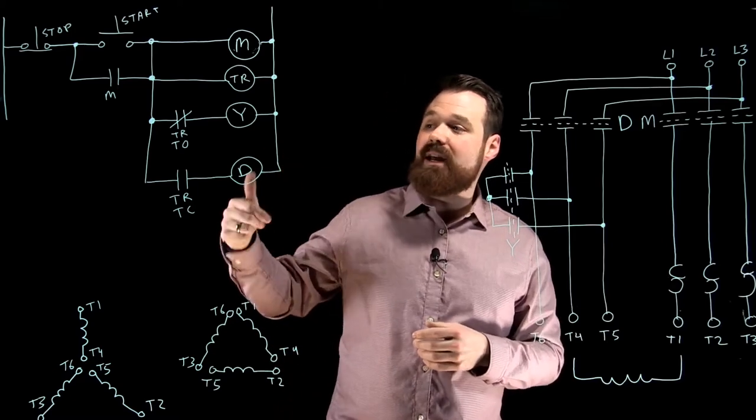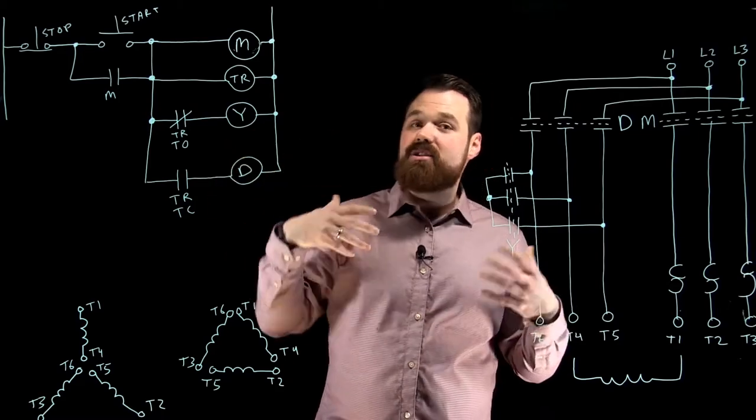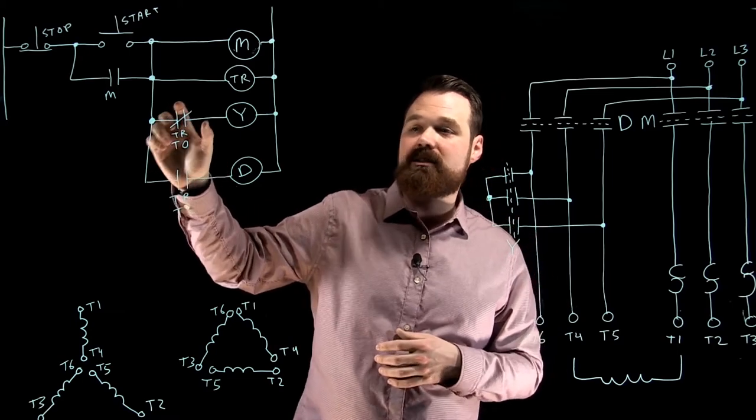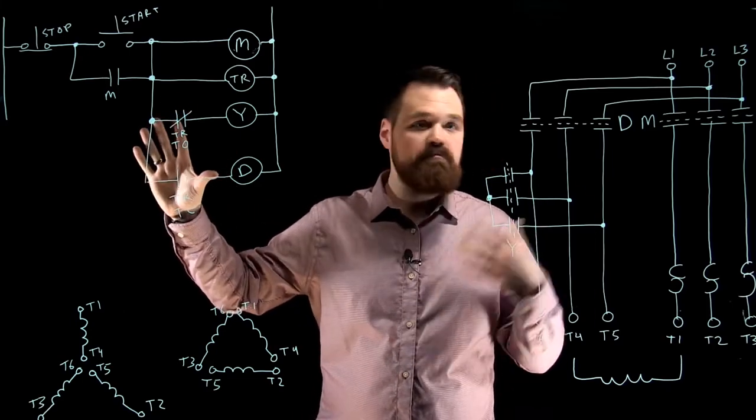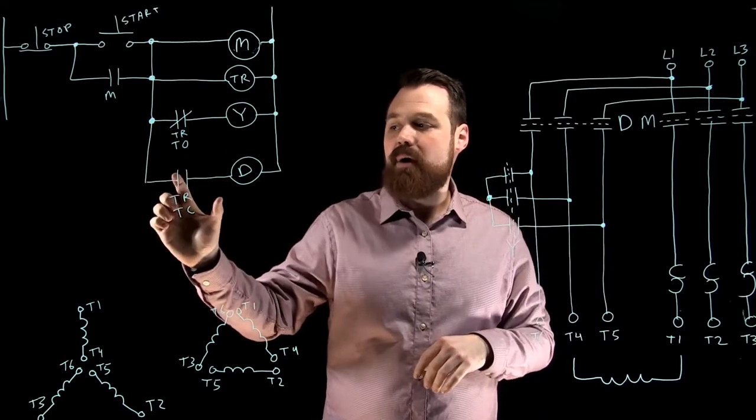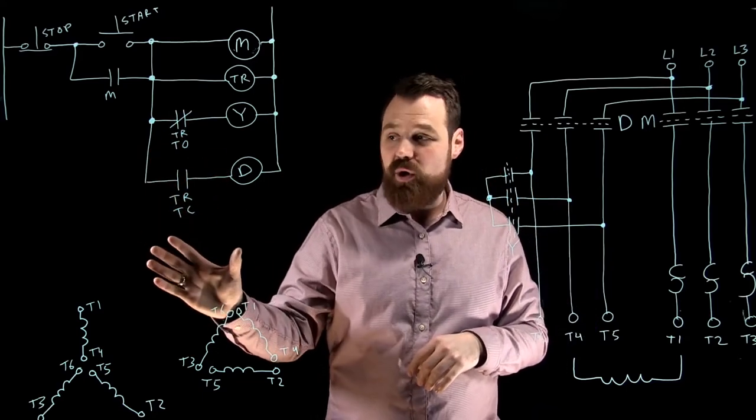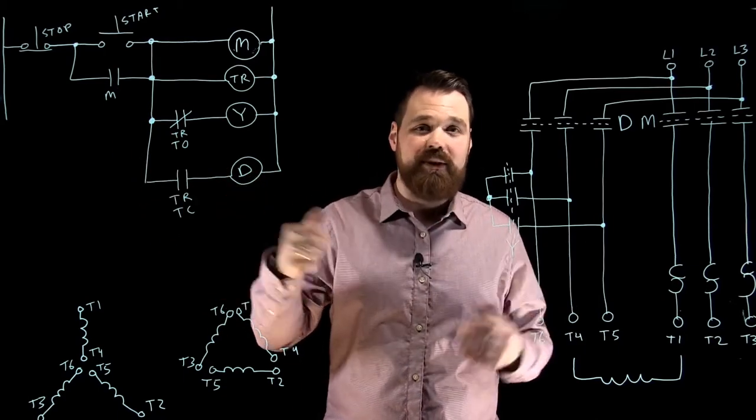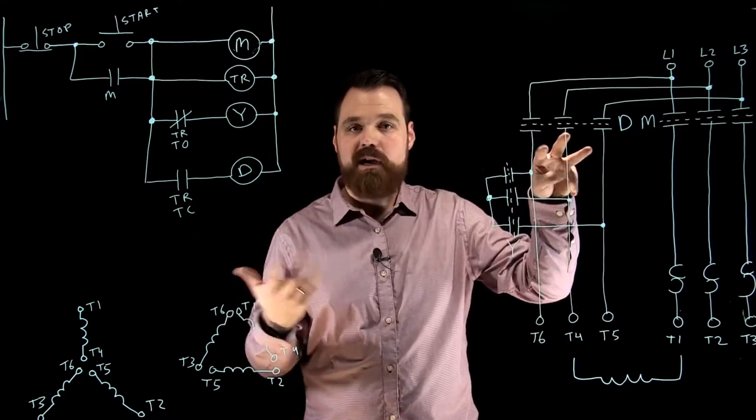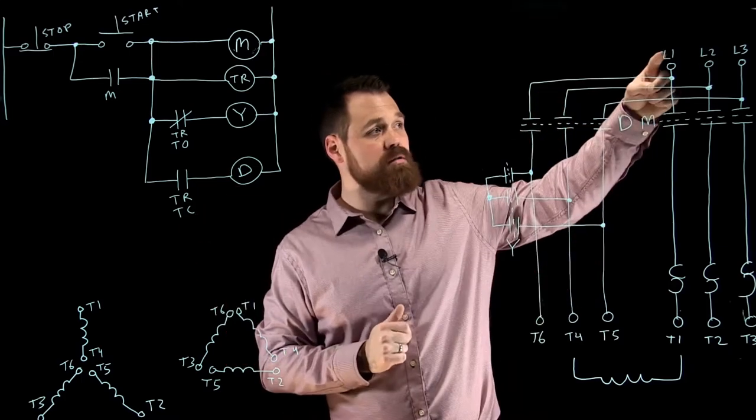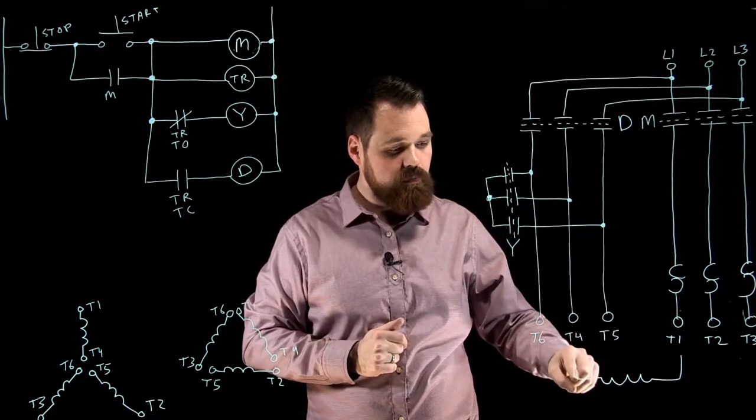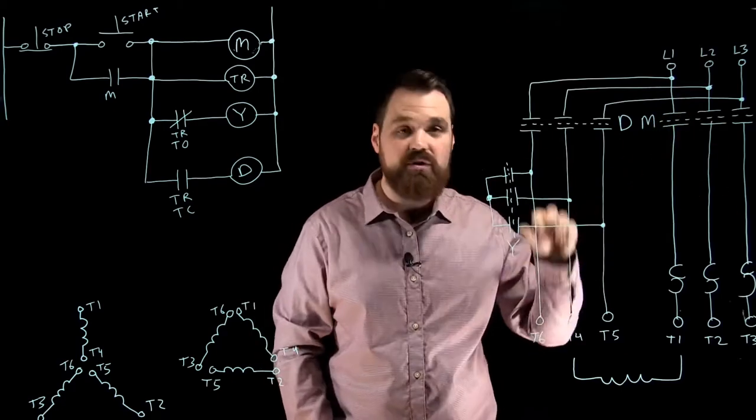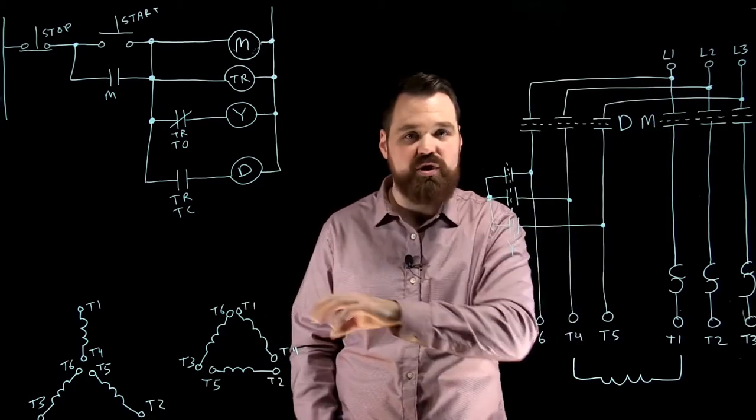Then what happens after a few seconds, this would be considered an open transition, because what would happen is my normally closed time to open contacts would open, basically de-energizing it in Y, and my normally open time to close contacts are going to close, energizing my D coil or my delta coil, which would close these sets of contacts. So now when current flows, it would flow through line 1 T4 and then back to the source, which would essentially put all of those into that delta formation, so we switched around that formation.